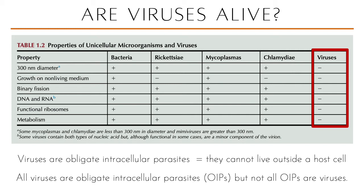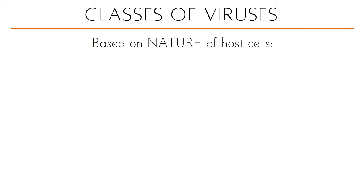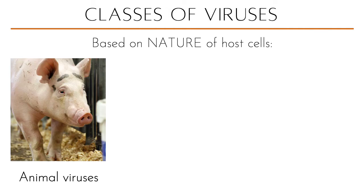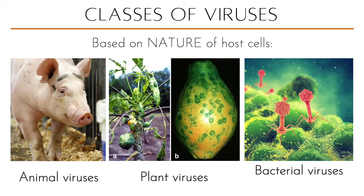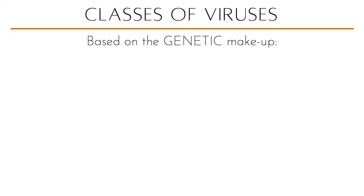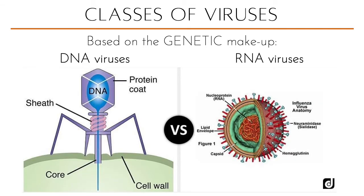How do we classify viruses? The number one basis for classification is the nature of the host cells — what do these viruses infect? You have animal viruses, which infect animals including us; plant viruses; and viruses that also attack bacteria, which we call bacteriophages. We can also classify viruses based on their genetic makeup — the nucleic acid that carries genes encoding for their proteins — so they may be DNA viruses or RNA viruses.